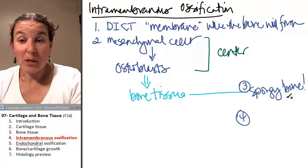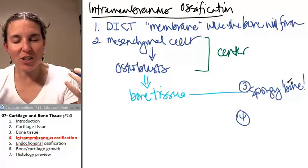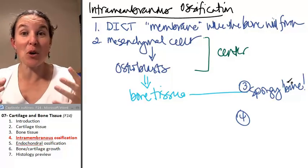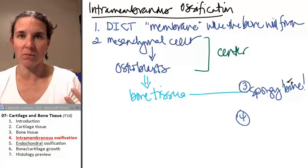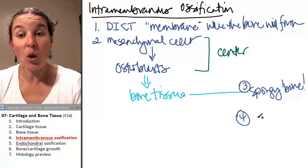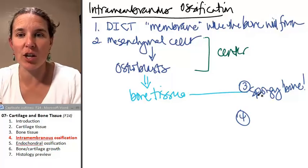The osteoblasts in the spongy bone keep building bone and eventually, can you visualize how the spongy bone could, if we kept building bone tissue all around ourselves, if we're the osteoblasts, we could eventually turn that spongy bone into compact bone.